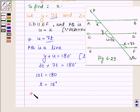This implies that angle Y, which is equal to 3T, equals 3 times 18, which is 54 degrees. So angle Y is 54 degrees.